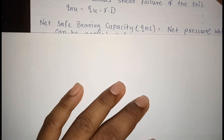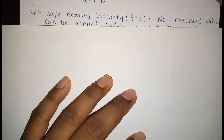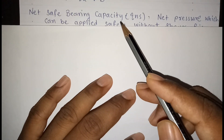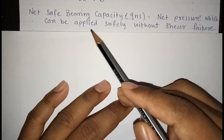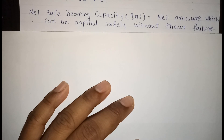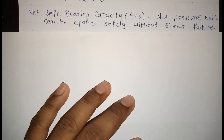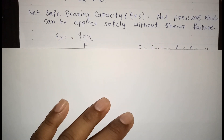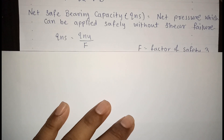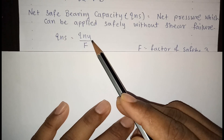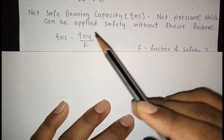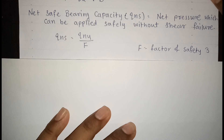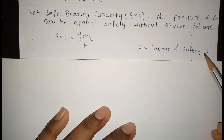The next definition is net safe bearing capacity, denoted by QNs. It is the net pressure which can be applied safely without shear failure. Net safe bearing capacity is calculated as QNU divided by the factor of safety. Usually, for shallow foundations, the factor of safety is taken as 3.